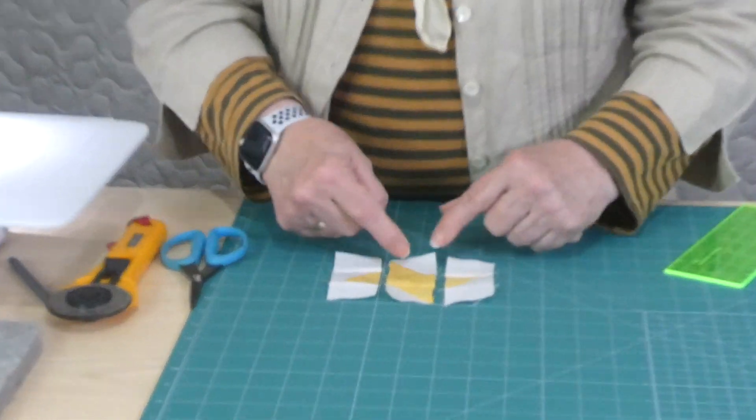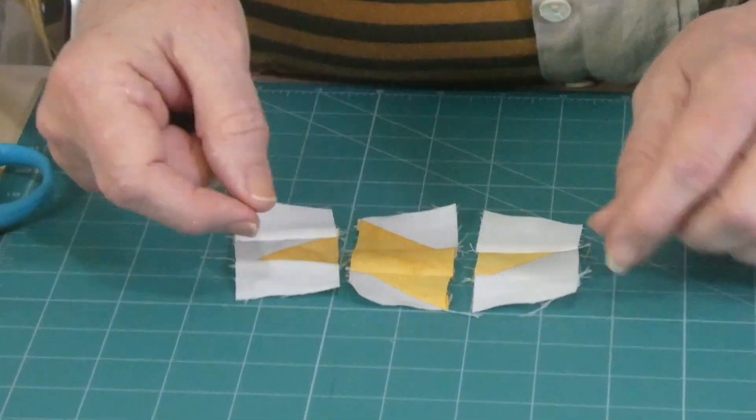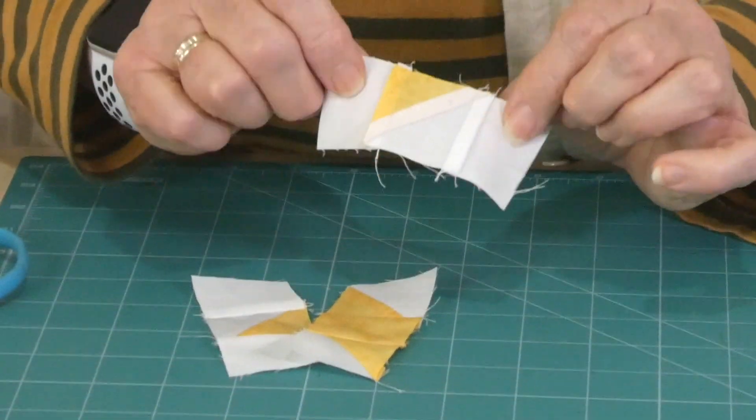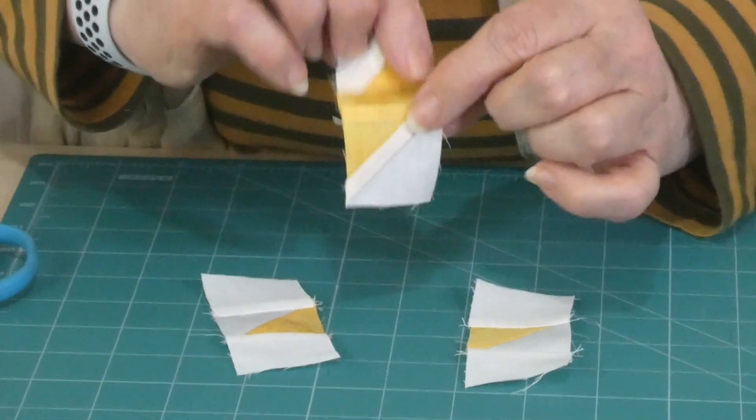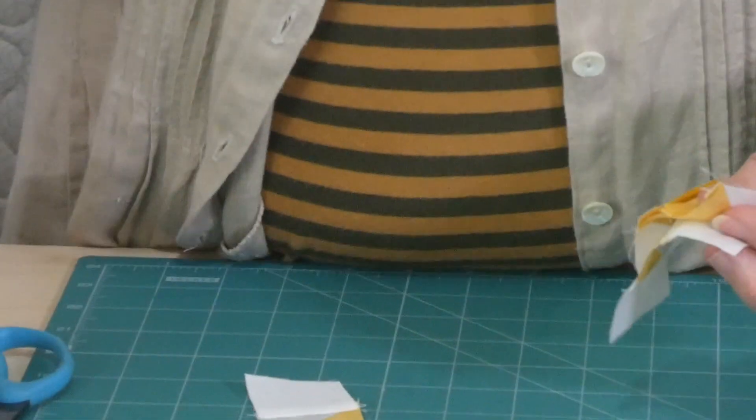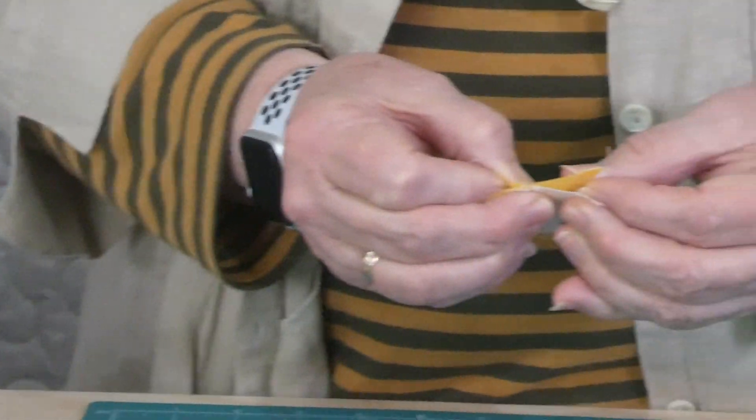So I've put my three little rows of three squares together, and I've pressed them so that the seams are going out there, in there, and out there so that they'll nestle where they meet. So I'll go ahead and get these joined up together now as well.